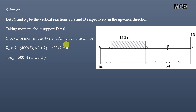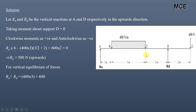From this, Ra = 500 N. Since this is positive, the direction of Ra is upward. From vertical equilibrium of forces — summation of upward forces equals summation of downward forces — Ra + Rd = 400 × 3 + 600, giving Rd = 1800 − 500 = 1300 N. This is positive, so Rd also acts upward.